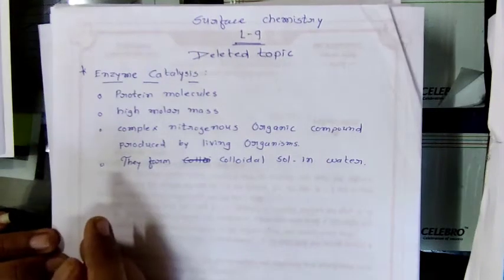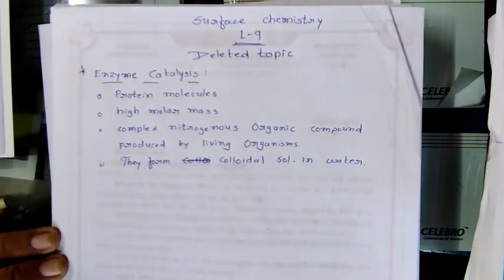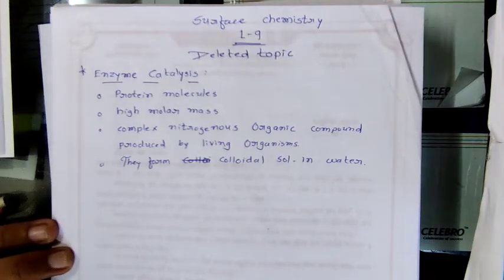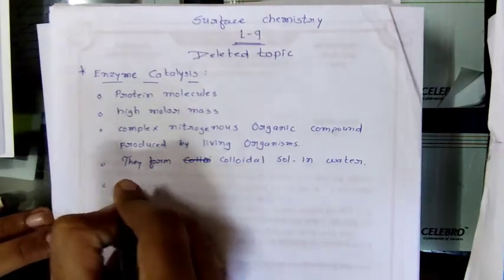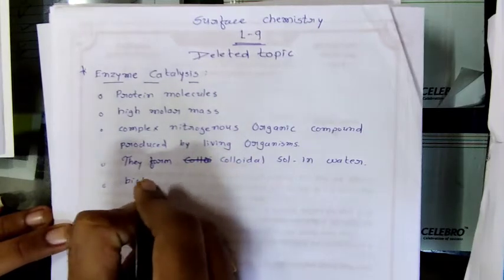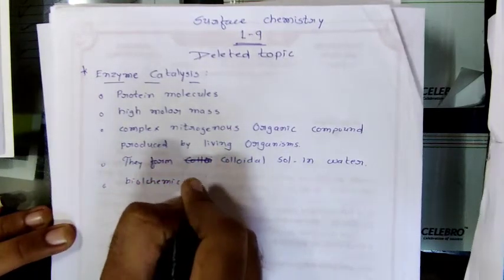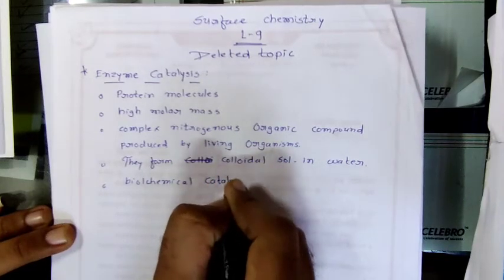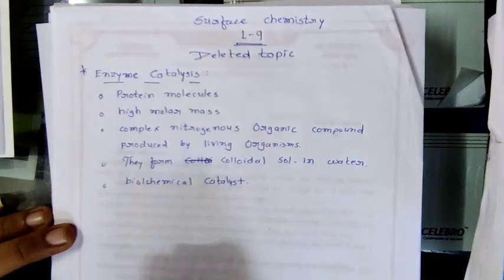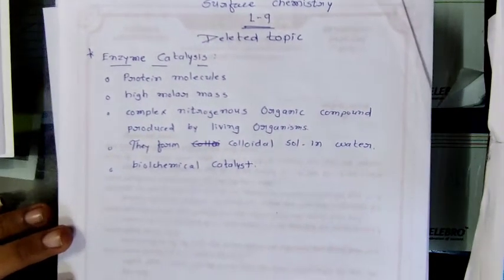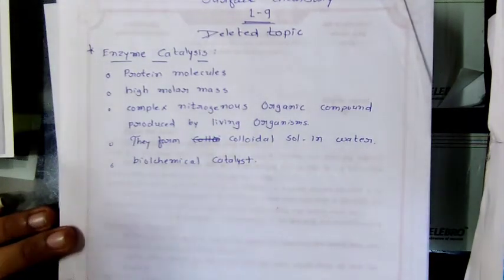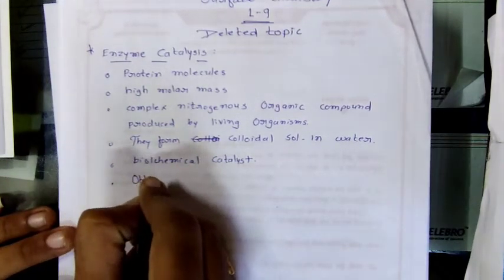Most of the reactions in our bodies — whether in animals or plants — that maintain life processes are enzyme-catalyzed. Therefore, enzymes are known as biochemical catalysts, and this phenomenon is known as biochemical catalysis. Many enzymes have been obtained in pure crystalline state from living cells.